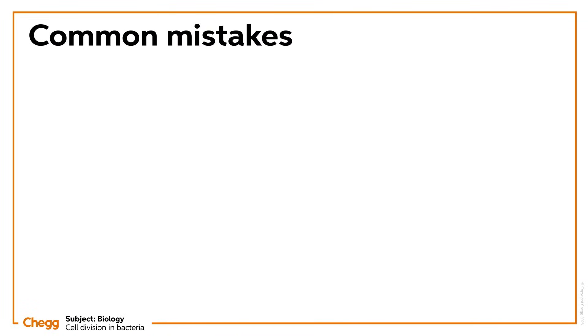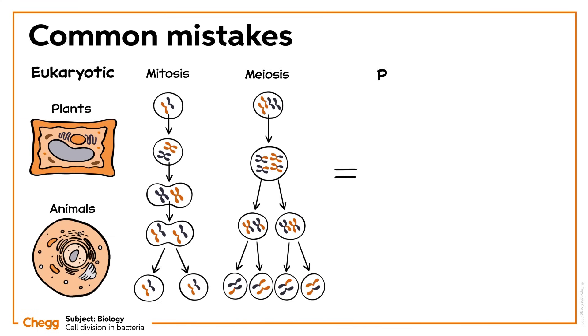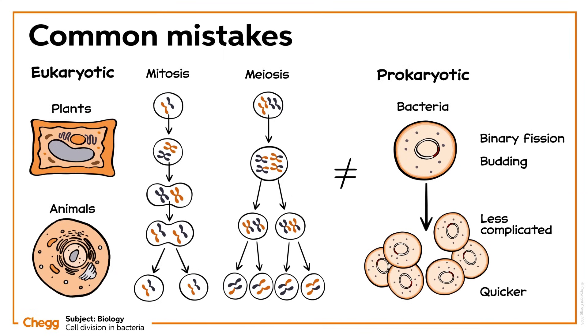Try not to confuse eukaryotic mitosis and meiosis with prokaryotic replication strategies, like binary fission and budding. Prokaryotic cell division is much less complicated and much quicker, allowing bacterial colonies to grow rapidly.